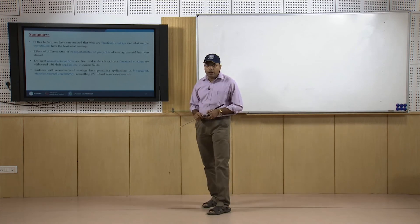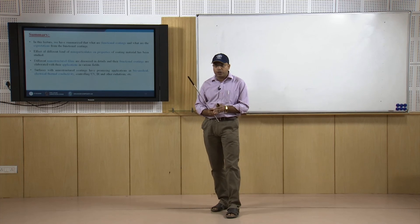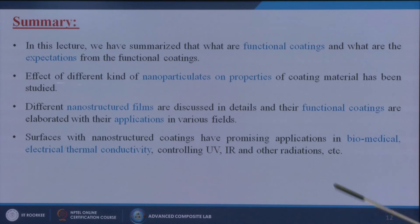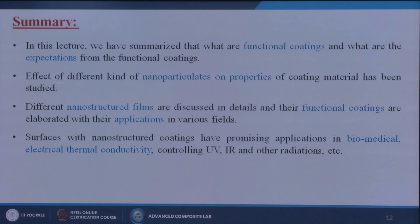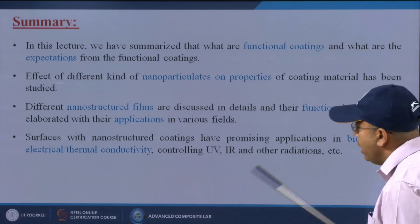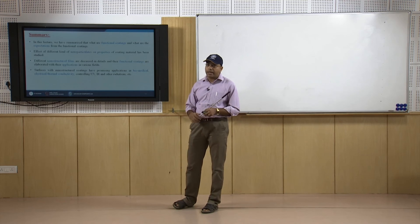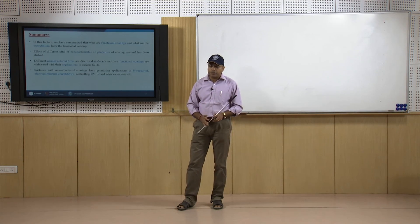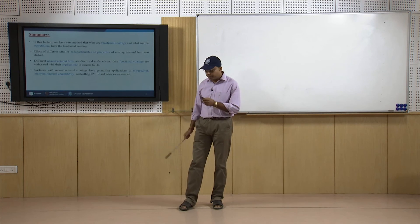In summary, this lecture discussed the definition of functional coatings, their advantages, and different types. The effect of different nanoparticulates on the properties of coating materials was studied. Different nanostructure films were discussed in detail and their functional coating applications elaborated across various fields. Surfaces with nanostructure coatings have promising applications in biomedical fields, electrical and thermal conductivity enhancement, and controlling UV, IR, and other radiation. There are numerous applications for which we can use these functional coatings.